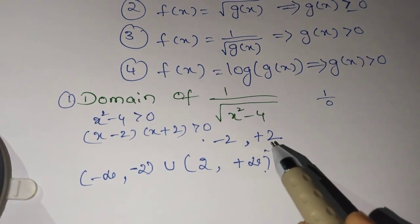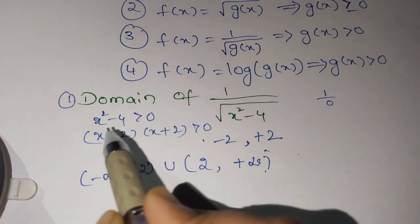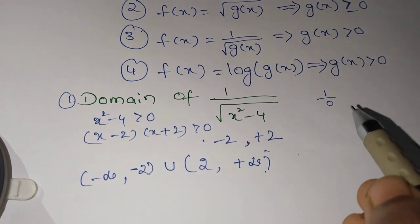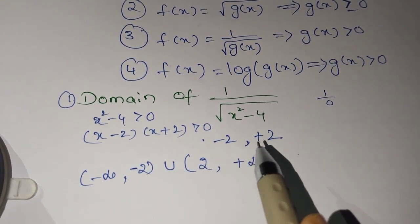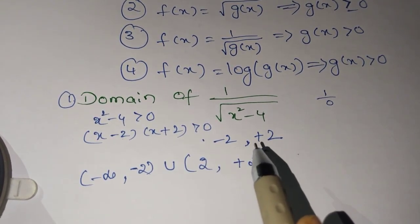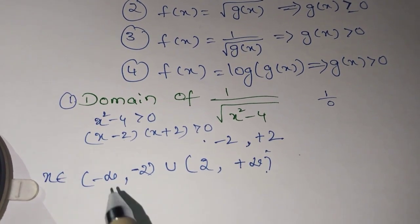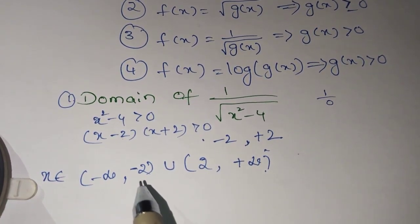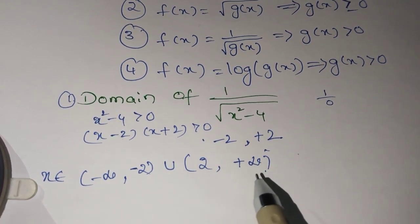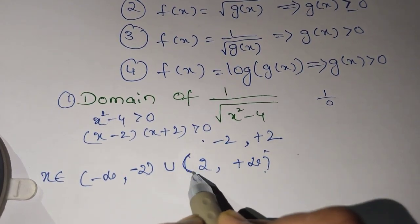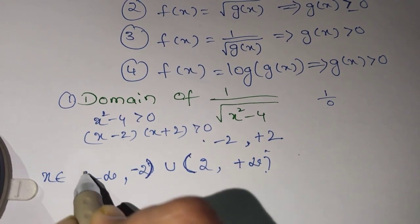If we substitute plus 2, we get 4 minus 4 equals 0 — again undefined. So except these values, we use all real numbers. Therefore x belongs to minus infinity comma minus 2, union 2 comma plus infinity. These values are not included, which is why we use open brackets.